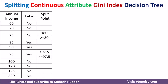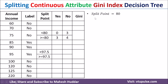We first find the Gini index for split point 80, then for 97.5, and then decide which is the best. For split point 80, we count the examples: for less than 80, there are three examples — 60, 70, and 75 — all of which are 'no.' For greater than or equal to 80, there are seven examples, of which three are 'yes' and four are 'no.'